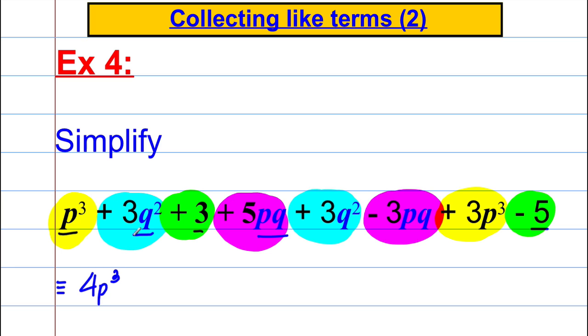We can—let's do the pq next just to keep the algebra first and the number term at the end. 5pq take away 3pq is obviously 2pq, and 3 take away 5 is negative 2 or subtract 2. So that's our answer.